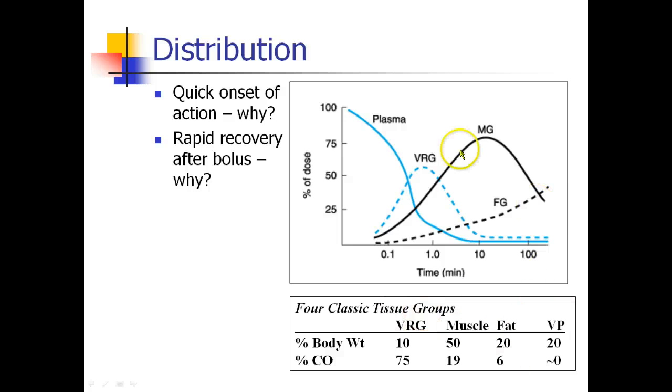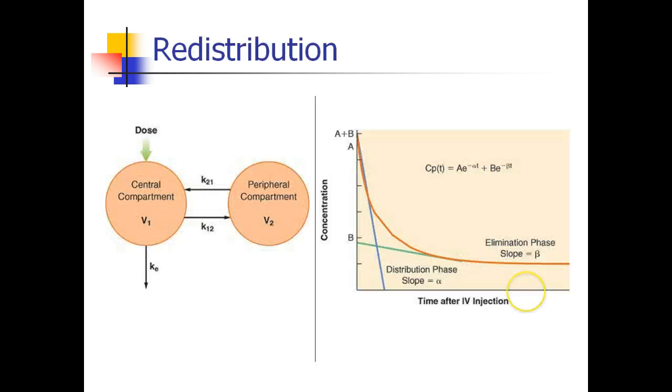There's actually a fourth compartment, not even shown on here, called the vessel-poor group. This would be like your bones and your teeth, other parts of your body which could make up a fair bit of body weight but have no real perfusion and no cardiac output. To think of this a different way, when you give a dose of drug, it goes into this central compartment, which is your plasma, your vessel-rich group. And it's true that the drug begins to get metabolized and eliminated, but most of the action is the drug being moved out of the central compartment into the peripheral compartment, this muscle group and this fat group.